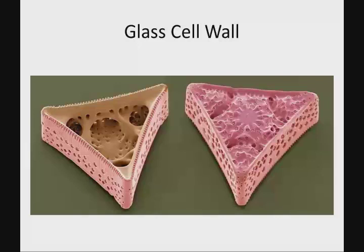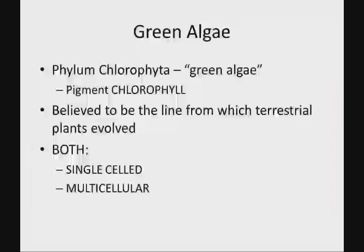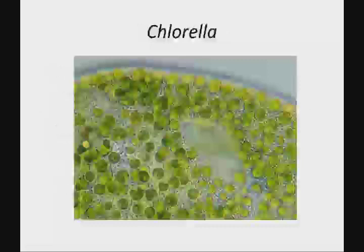So we've covered the dinoflagellates and the diatoms. Now let's think about the green algae, which will be our segue into land plants. All land plants have very similar basic photosynthetic pigments based on chlorophyll, and we see those same pigments here. The green algae Chlorophyta all have chlorophyll — the same types found in terrestrial plants. This phylum includes both single-celled and multicellular forms, and it's our progression from single-celled organisms into multicellular land plants.